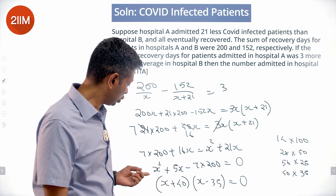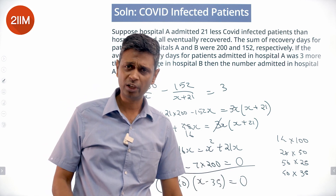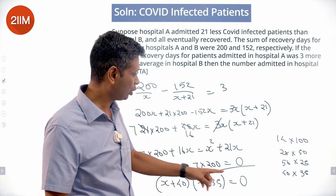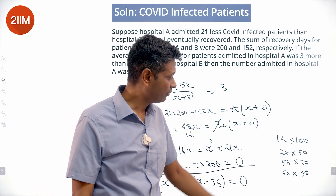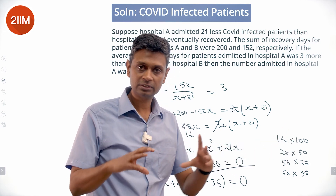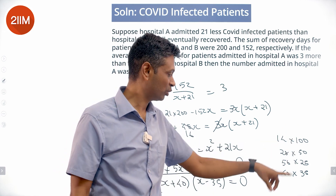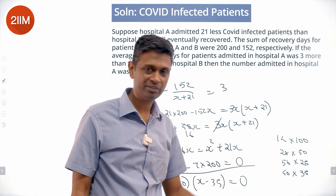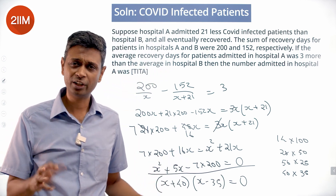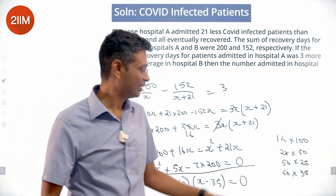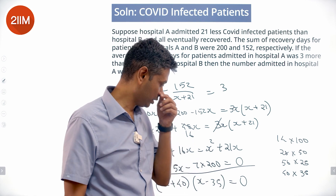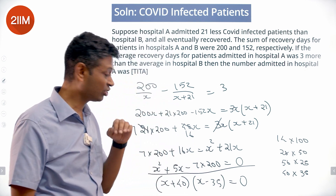It took me a while to factorize this because with 7×200, I kept breaking it by keeping both 5s on the same side. The two 5s sitting together in the product made it hard. Once you put one 5 on one side and one 5 on the other, the difference becomes 5 and it's easy to factorize. So x is 35.